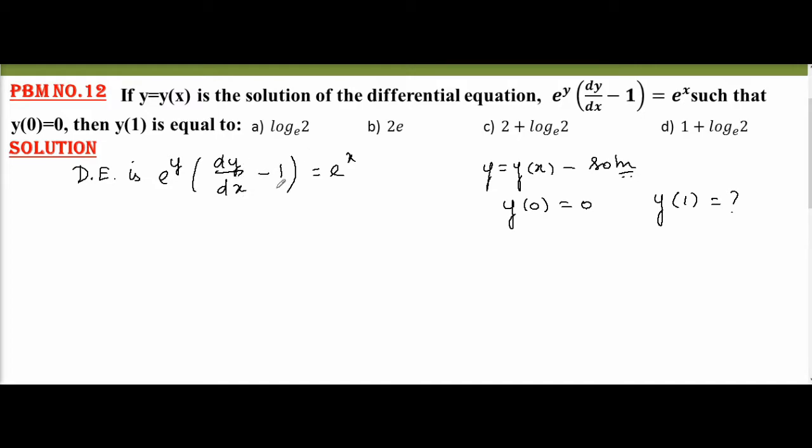dy by dx minus 1 equal to, let me rearrange this differential equation. Therefore, I get this is equal to e power y on the side, it will be e power minus y. Taking it together, I get e power x minus y. Therefore, we get dy by dx equal to e power x minus y plus 1.